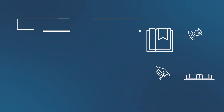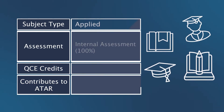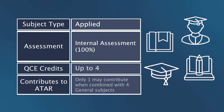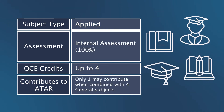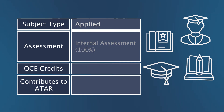Dance in Practice is an applied subject consisting of four units that are completed over Year 11 and 12. The successful completion of all Dance in Practice units provides up to four core credits towards a student's QCE. Dance in Practice will only contribute to a student's ATAR calculation if they are studying four general subjects.